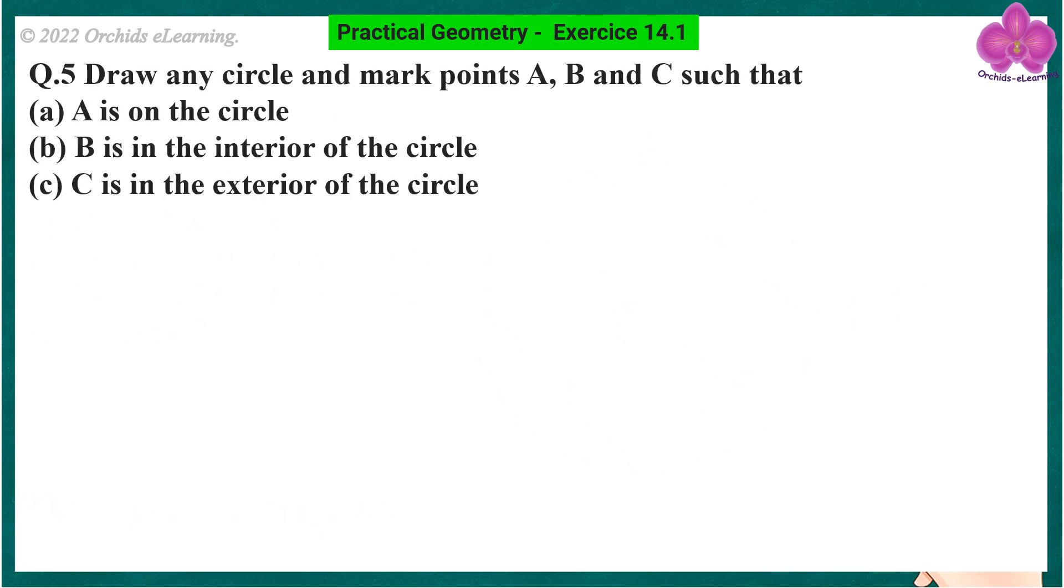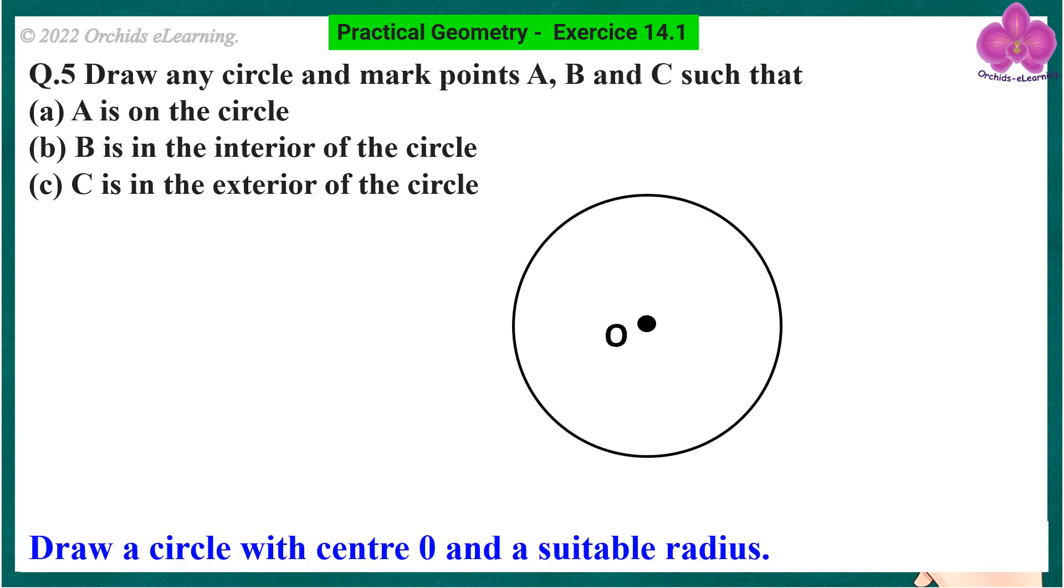Draw any circle and mark points A, B, and C, such that A is on the circle, B is in the interior of the circle, C is in the exterior of the circle. Draw a circle with center O and a suitable radius.